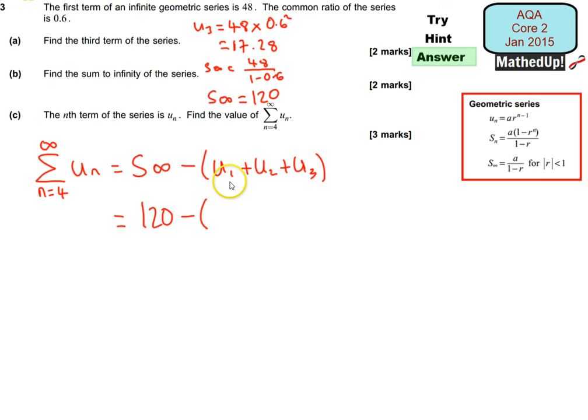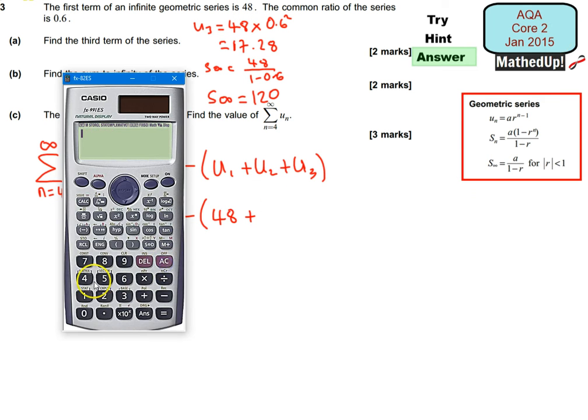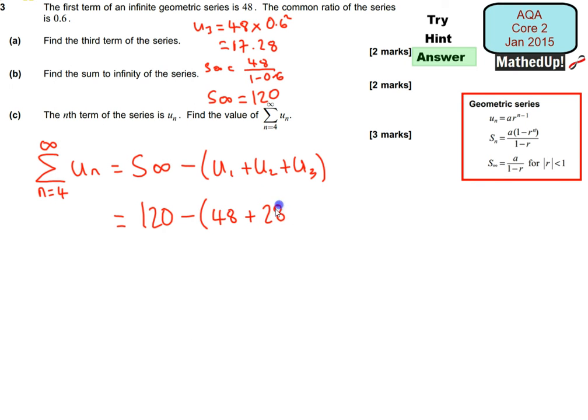we know is 48. My second term is going to be 48 multiplied by 0.6, which is 28.8. And then my third term is going to be 28.8 times by 0.6. But we've already worked out the third term earlier, which is going to be 17.28.